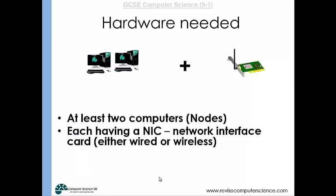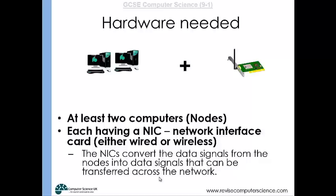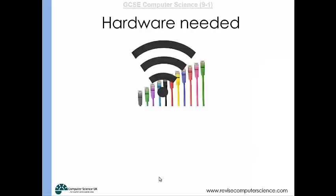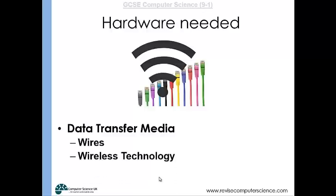At least two computers with a network interface card are required. The network interface card converts data signals from your computer into a signal that can be sent across the network. For data transfer media, you might use radio waves for wireless, an ethernet cable, or a fibre optic cable.